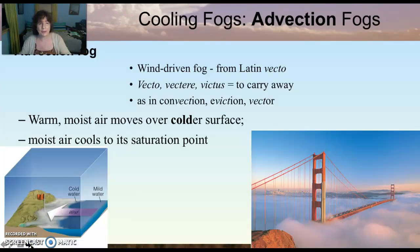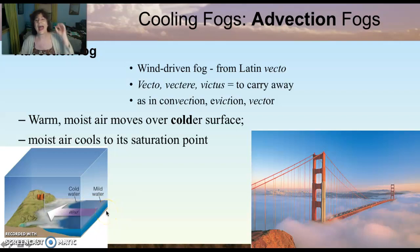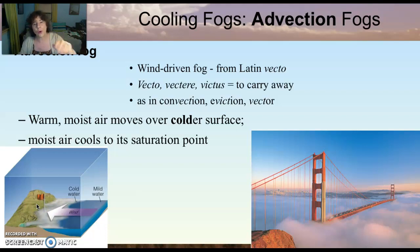Another type of cooling fog is advection fog. 'Vecto' in Latin means wind — this fog is carried on the wind. These are the very thick fogs in San Francisco. Mild, warmer air from out in the Pacific comes across a very cool current right next to the coast of California, chills over that cool current, and the wind drives it right into the San Francisco Bay. That is called an advection fog — a wind-driven fog that cooled over a cooler surface.